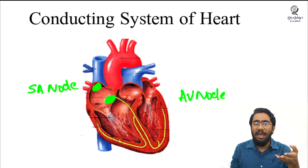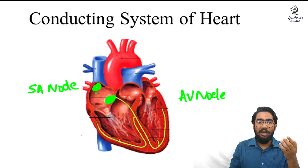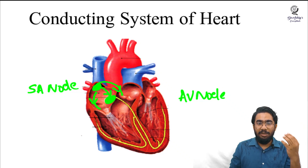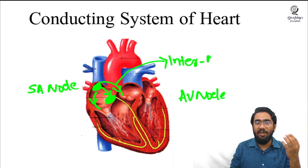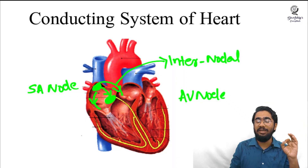The signal originating in the sinoatrial node spreads through the atrial wall and reaches the atrioventricular node. The pathway present between these two nodes is known as the internodal pathway — 'inter' meaning in between, so internodal means in between the two nodes.